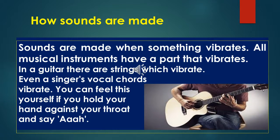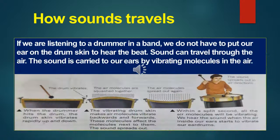The second objective of today's study is how sounds are made. Sounds are made when something vibrates. All musical instruments have a part that vibrates. In a guitar there are strings which vibrate. Even a singer's vocal chords vibrate — you can feel this yourself if you hold your hand against your throat and say 'aah'. The sound is carried to our ears by vibrating molecules in the air.